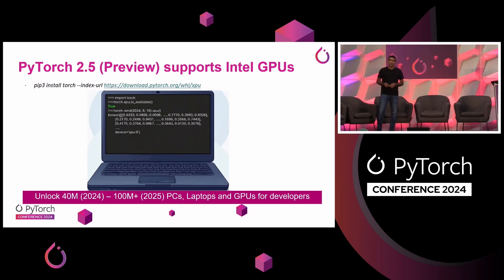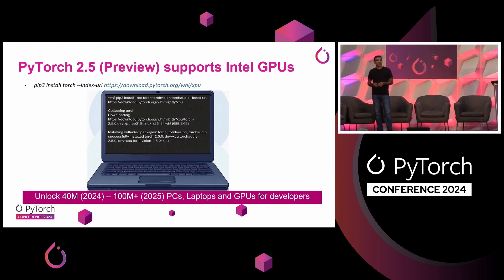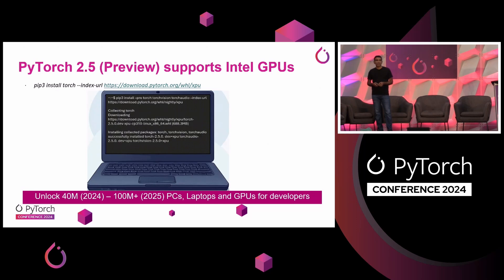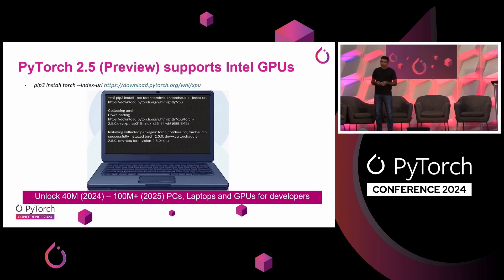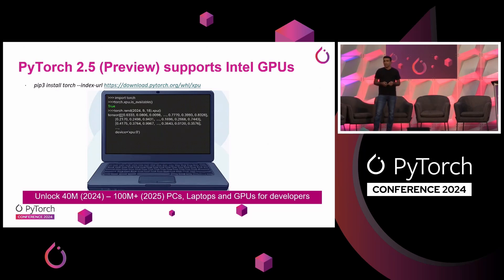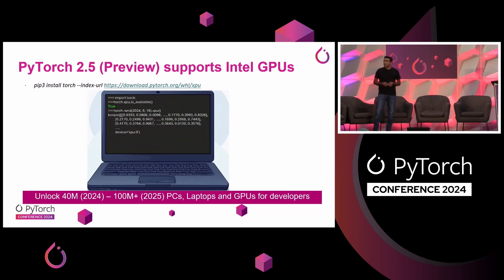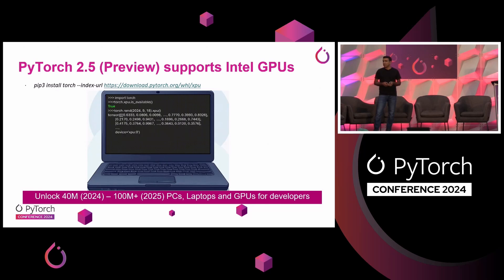In PyTorch 2.4, we introduced support for Intel data center Max series GPUs through source build. We continue to make progress on that. In PyTorch 2.5, we'll have support for these GPUs in the PyTorch release binaries. One of the interesting enhancements is that we have added support for Intel client GPUs in PyTorch 2.5, meaning you'll be able to run PyTorch on Intel laptops and desktops built using the latest Intel processors. We think it's going to unlock 40 million laptops and desktops for PyTorch users this year.